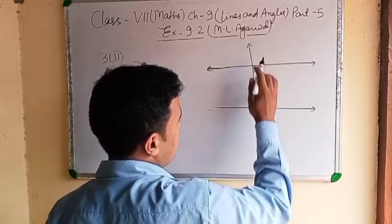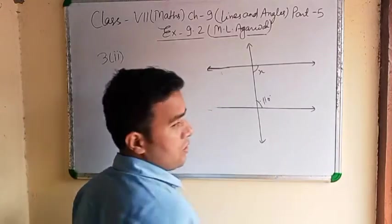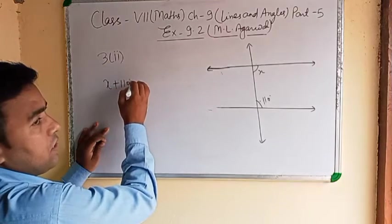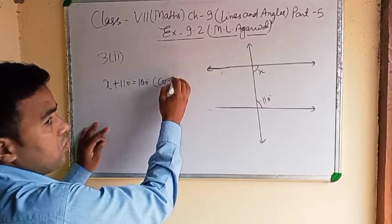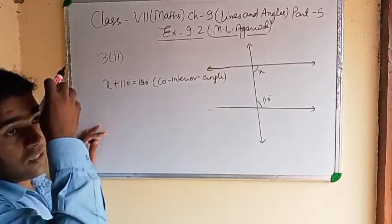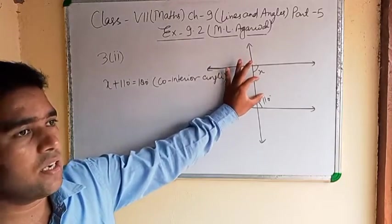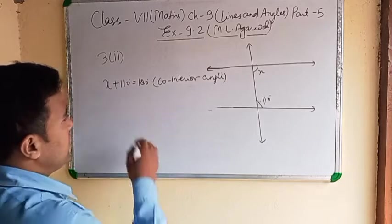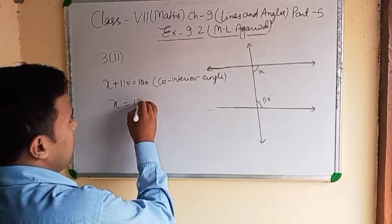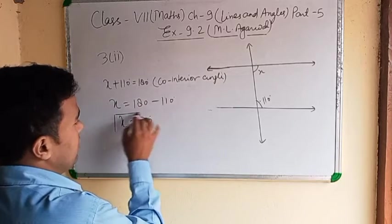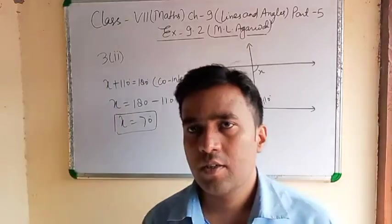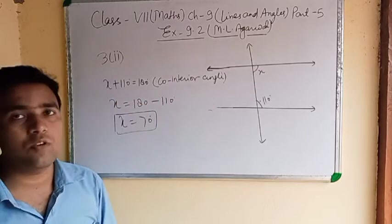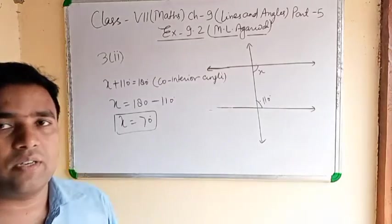In the second part of question 3, x and 110 degrees are given. The question asks to find the value of x. Since it is a co-interior angle: x plus 110 equals 180 degrees. So x equals 180 minus 110, which gives x equal to 70 degrees.